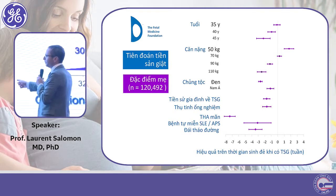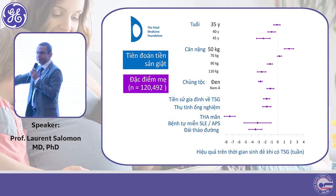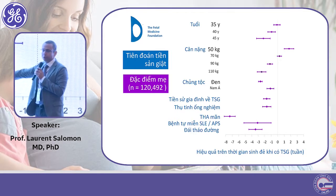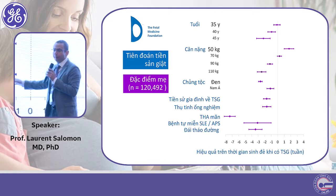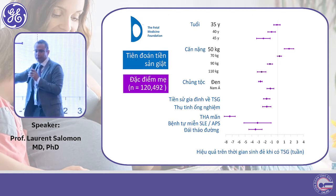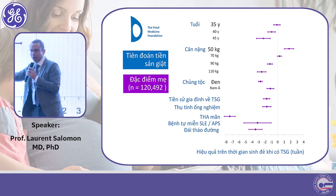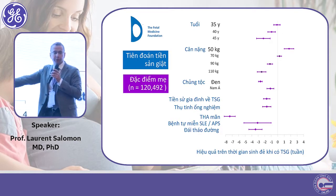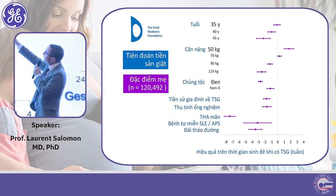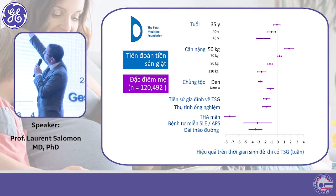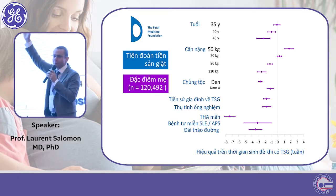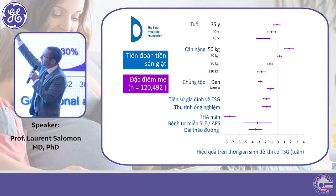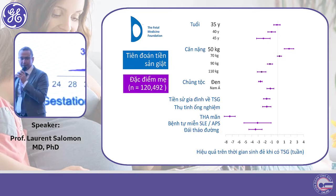If you have diabetes or autoimmune diseases, you are more likely to get preeclampsia early in pregnancy. Whereas if you are exposed to a healthy diet and weigh only 50 kilos, you are less likely to develop preeclampsia.